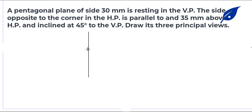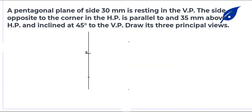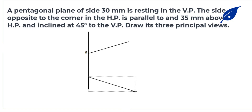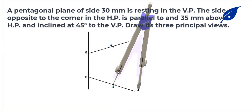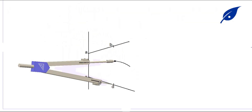We start by drawing the pentagon with side length 30 millimeters. Draw a line and mark point A, then measure 30 millimeters and draw the internal angle of 108 degrees using a protractor. Extend the lines so they connect, giving us the various points A, B, C, D, and E.